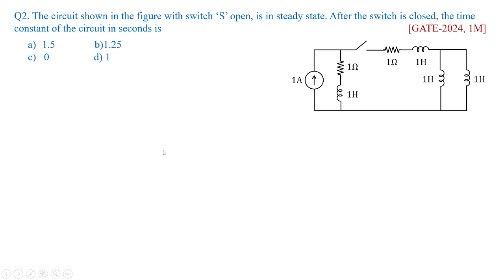In the next question you can see it is also asked in gate 2024 for one mark. The switch shown in the figure with S open is in steady state and after the switch is closed the time constant of the circuit in seconds options are given as 1.5, 1.25, 0 and 1 second. So how to solve this problem again you take the circuit as it is with switch closed and remove this current source.